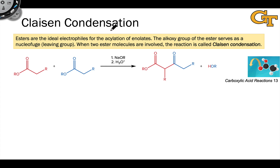In the last video, we saw some of the problems associated with using an acyl chloride or an anhydride as the electrophile in a nucleophilic acyl substitution with an enolate. And at the very end, we noted that esters are the ideal electrophiles when talking about the acylation of enolates. More specifically, we're going to focus on the acylation of ester enolates, which is a reaction called the Claisen condensation.